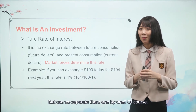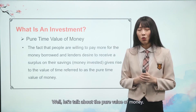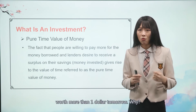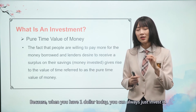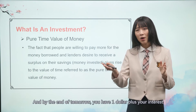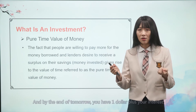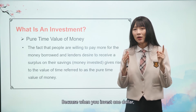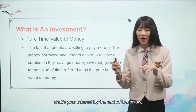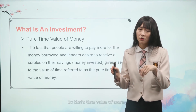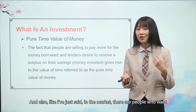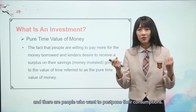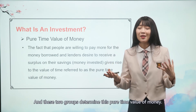Can we separate them one by one? Of course. Let's talk about the pure time value of money. You must have heard the saying that $1 today is worth more than $1 tomorrow. Why? Because when you have $1 today, you can always invest it, and by the end of tomorrow you will have $1 plus your interest — which is larger than that $1 tomorrow. So that's time value of money. In the market, there are people who want to advance their consumption and people who want to postpone it, and these two groups together determine the pure time value of money.